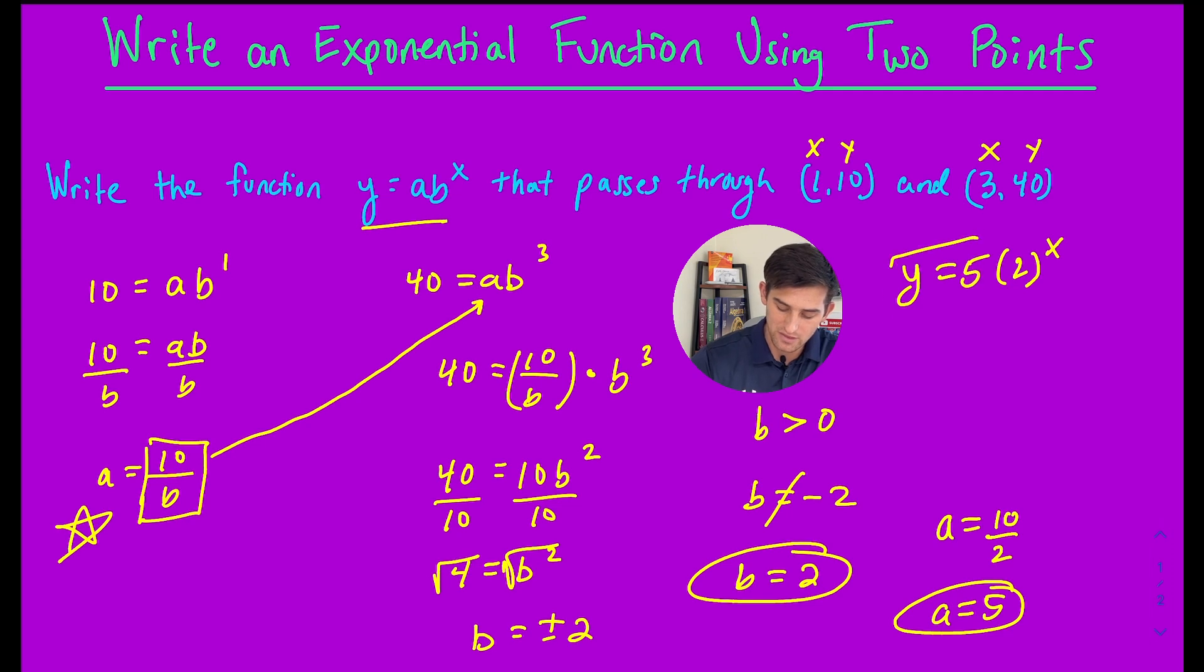Now we have the two pieces of information we need. The equation is y equals 5 times 2 to the x. That's how you can use two points on an exponential function to write the equation in y equals a times b to the x form.